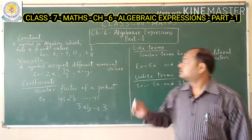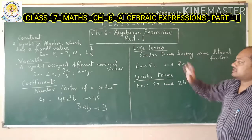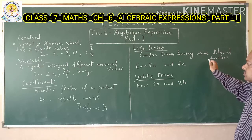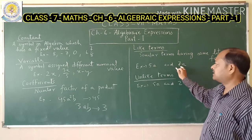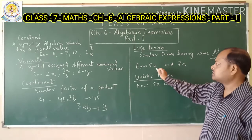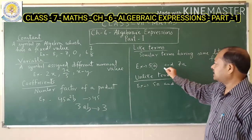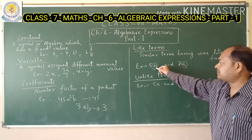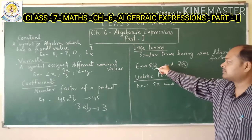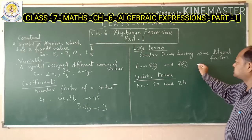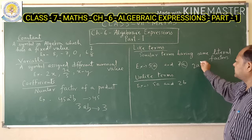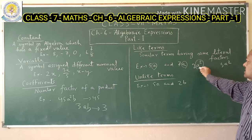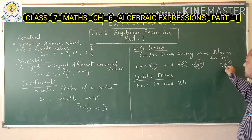Now, what do we mean by like terms? Like terms are similar terms having the same literal factors. For example, 5a and 7a — in both, 'a' is present, so 'a' is the common literal factor, making 5a and 7a like terms. Another example: 2a² and 3a² both have the same literal factor a², so they are also like terms.